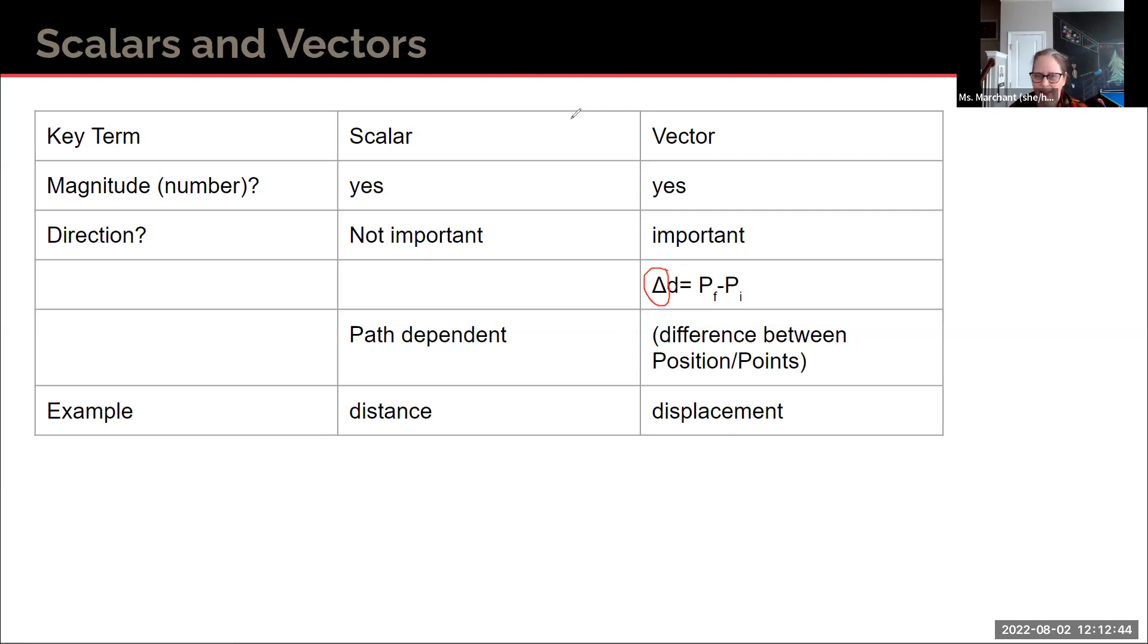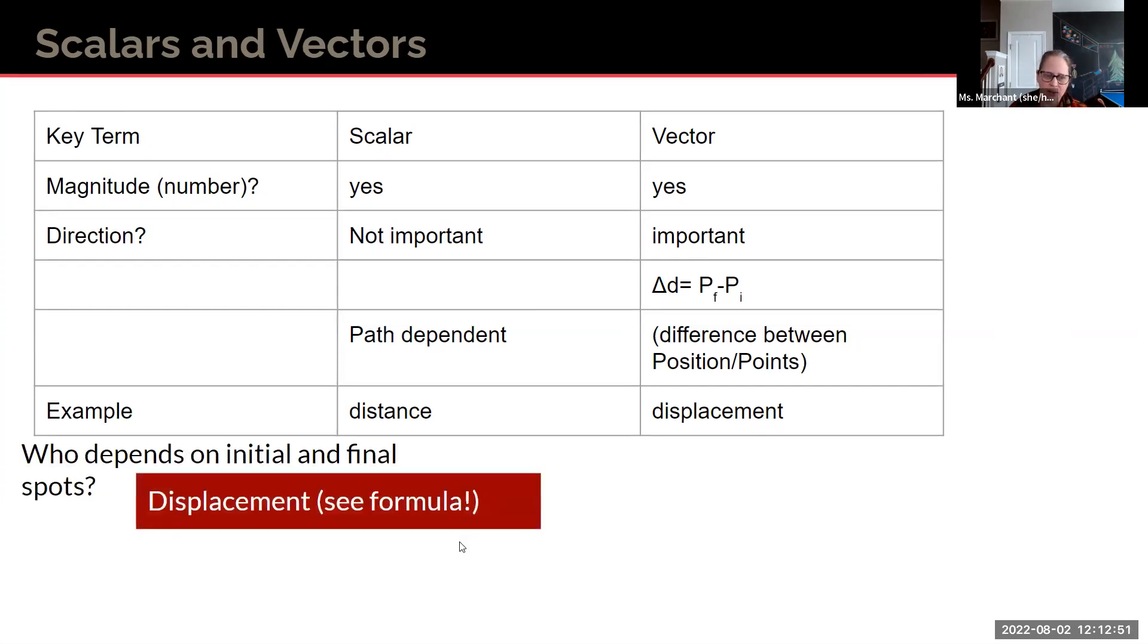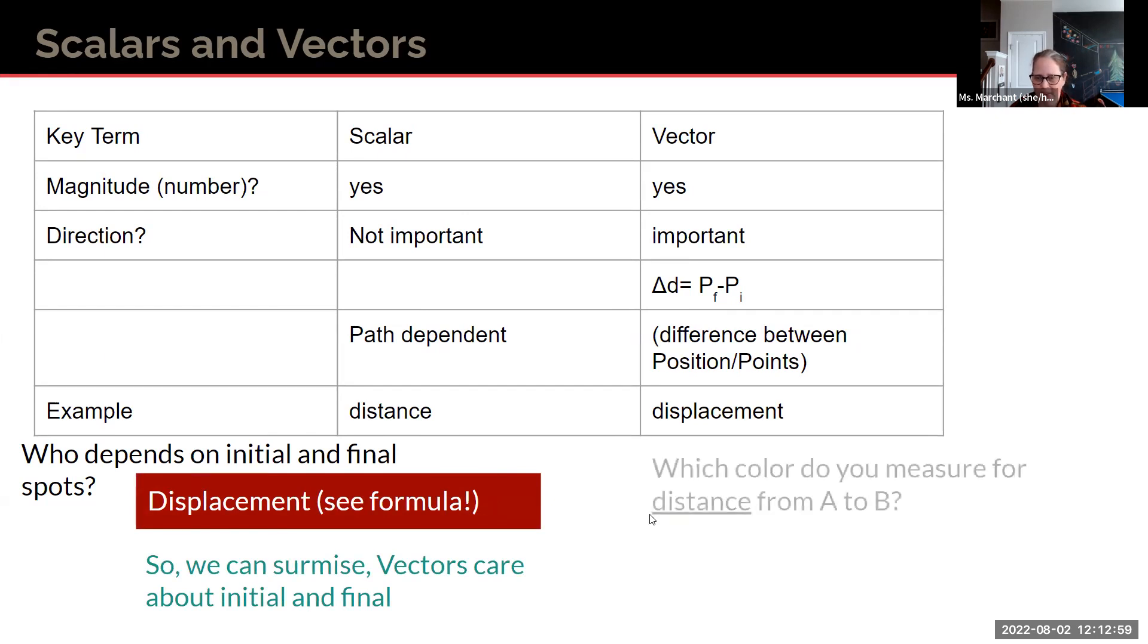Delta just means change. In math, it is a Greek symbol of delta there. And here's just another little visual on that. Who depends on initial and final displacement? Vectors care about initial and final positions. If we're going initial and final distance, we would use that black arrow's distance or length, because that's giving us as the crow flies between the two.